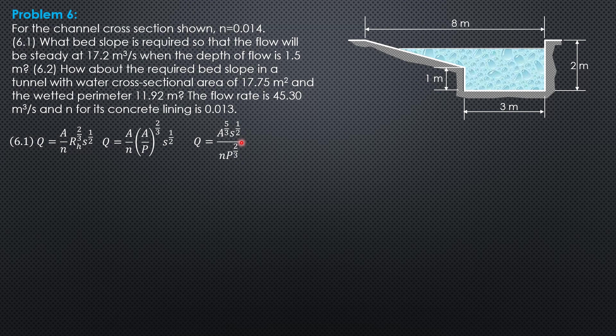The slope of the energy grade line is also the slope of the bed because the flow is steady and uniform. So S therefore is N square Q square perimeter to the 4 thirds over area to the 10 thirds.